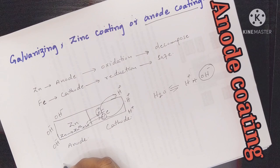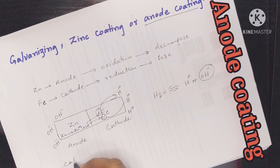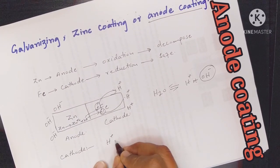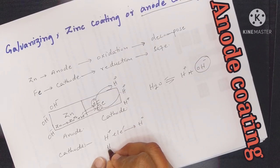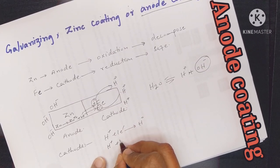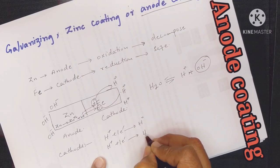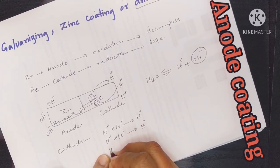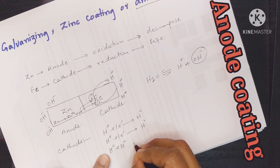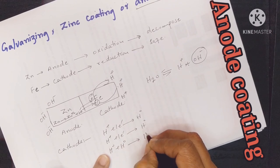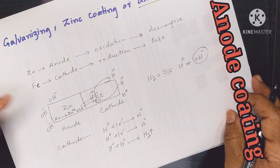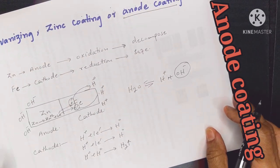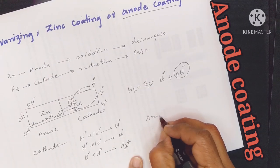At the cathode, hydrogen gains electrons and is converted into neutral hydrogen atoms, and then hydrogen gas is released at the surface of the cathode.